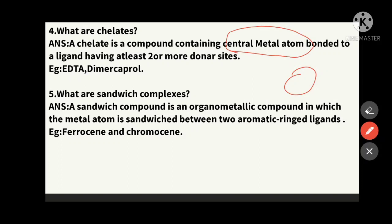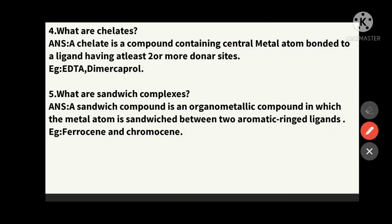The central metal atom is bonded to ligands that have at least two donor sites — these donor ligands have electrons they can donate easily. Examples of chelates: EDTA (ethylenediaminetetraacetic acid) and dimercaprol. These are chelates, also known as complexing agents, which you have studied in the analysis chapter.